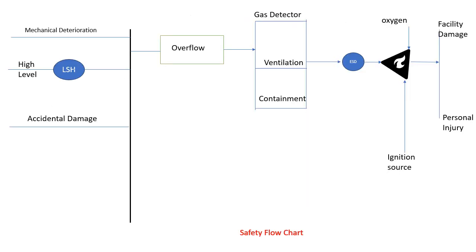Here is an example of a safety flow chart — this is a part of it focusing on one particular undesirable event. The example considers a high level situation occurring in a vessel. There may be many other undesirable events — high pressure, high temperature — that can be added to this same chart. If there is a high level, there is a protection mechanism through the LSH (level switch high), which will actuate some valve to bring the level back to normal.